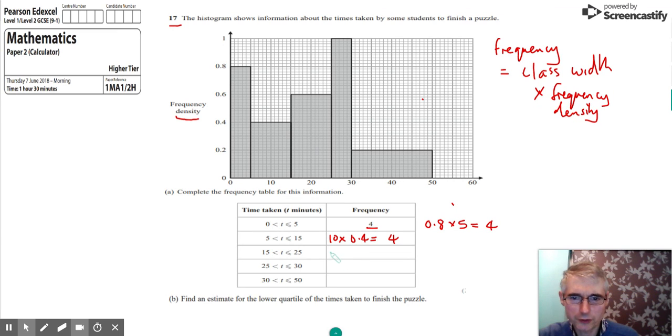And if we repeat that process for this one, the class width again is 10. And this time we're at a height of 0.6, as we can see there. We'll just project that across. So 10 times 0.6 gives us 6.